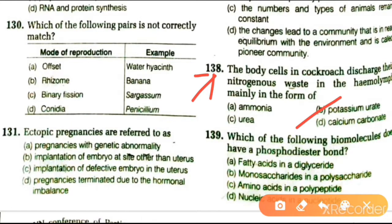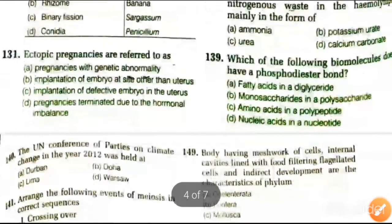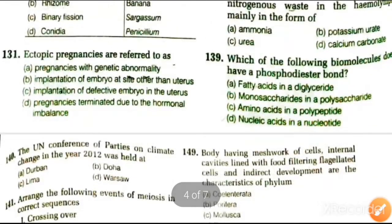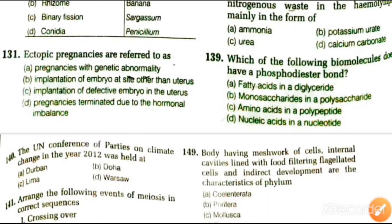Next question: which of the following biomolecules has a phosphodiester bond? Options are fatty acids in a diglyceride, monosaccharides in a polysaccharide, amino acids in a polypeptide, or nucleic acids in a nucleotide. The answer is nucleic acids — nucleotides connected by phosphodiester bonds.